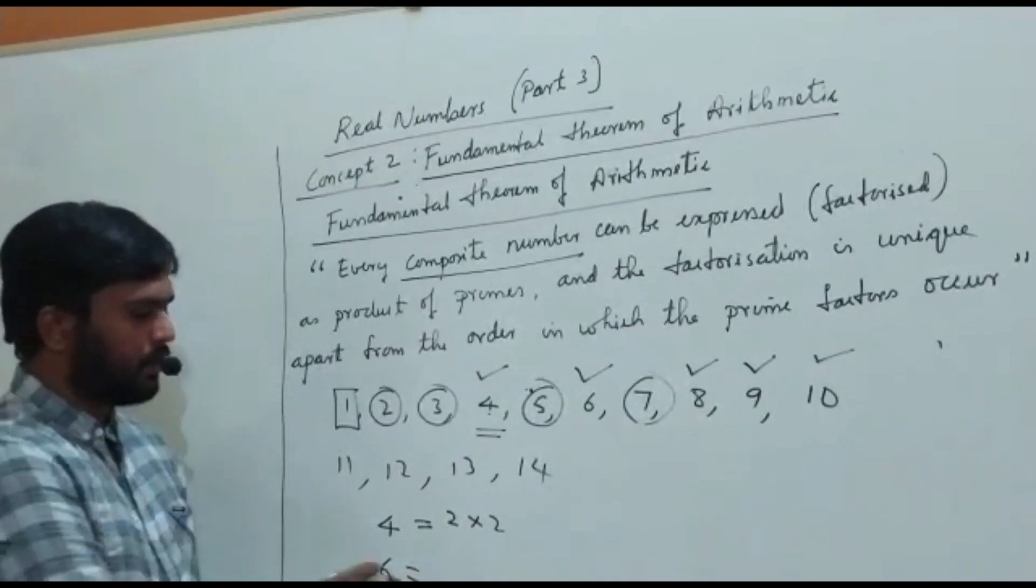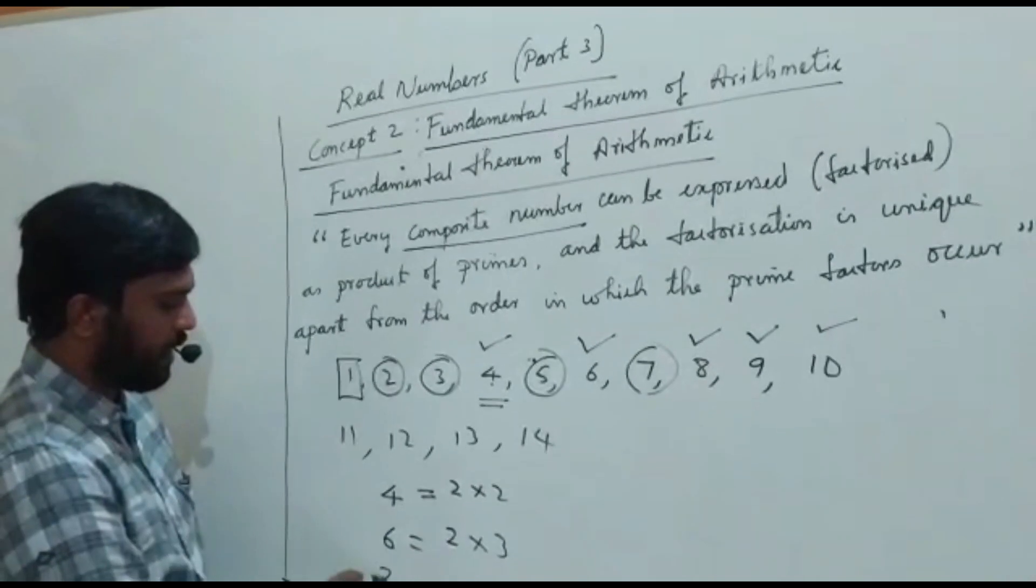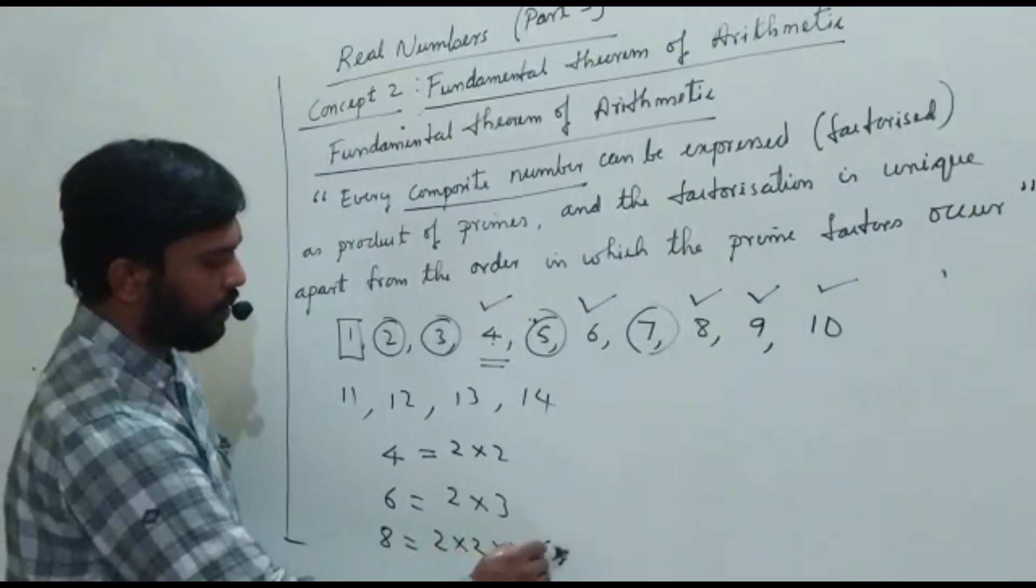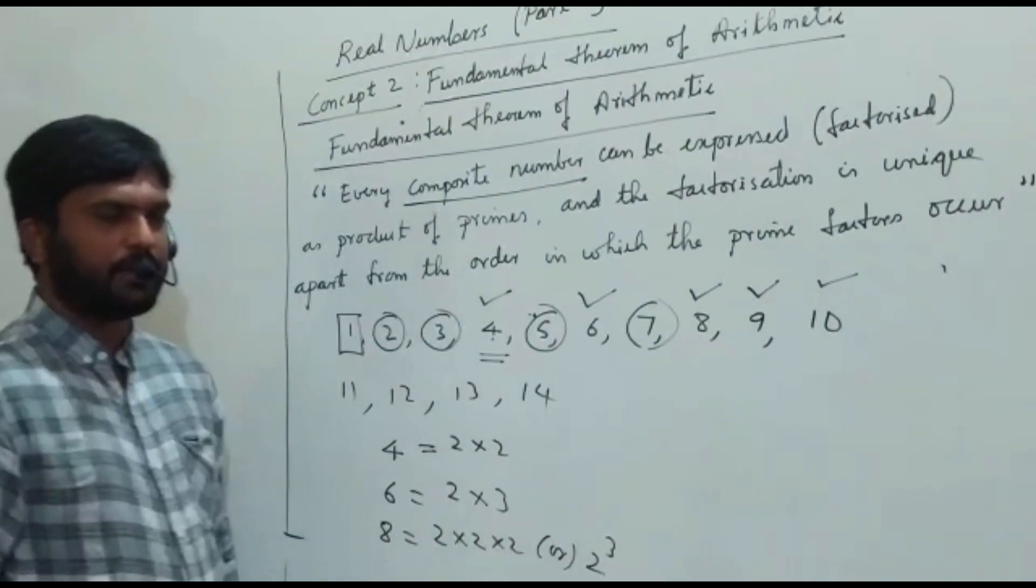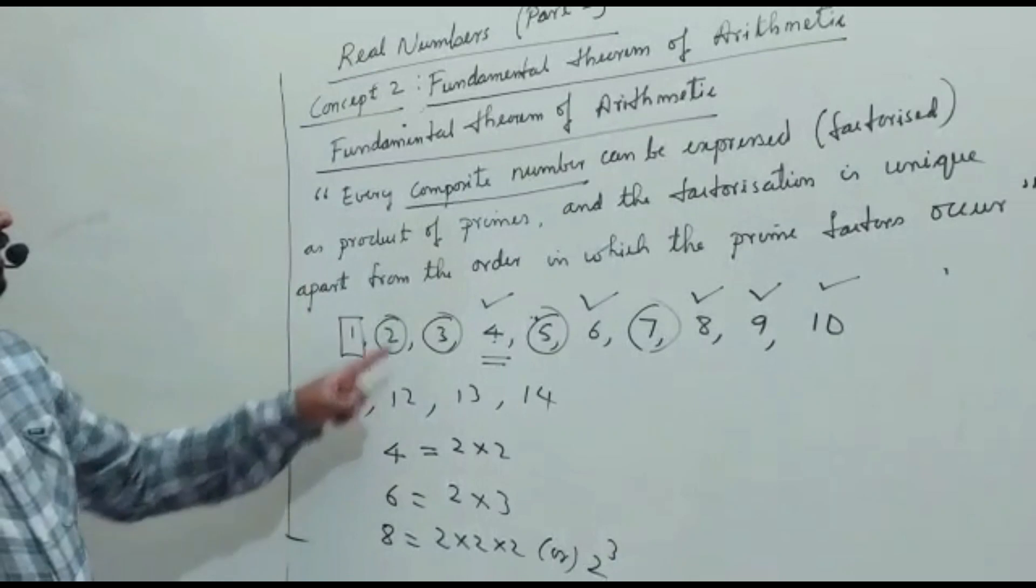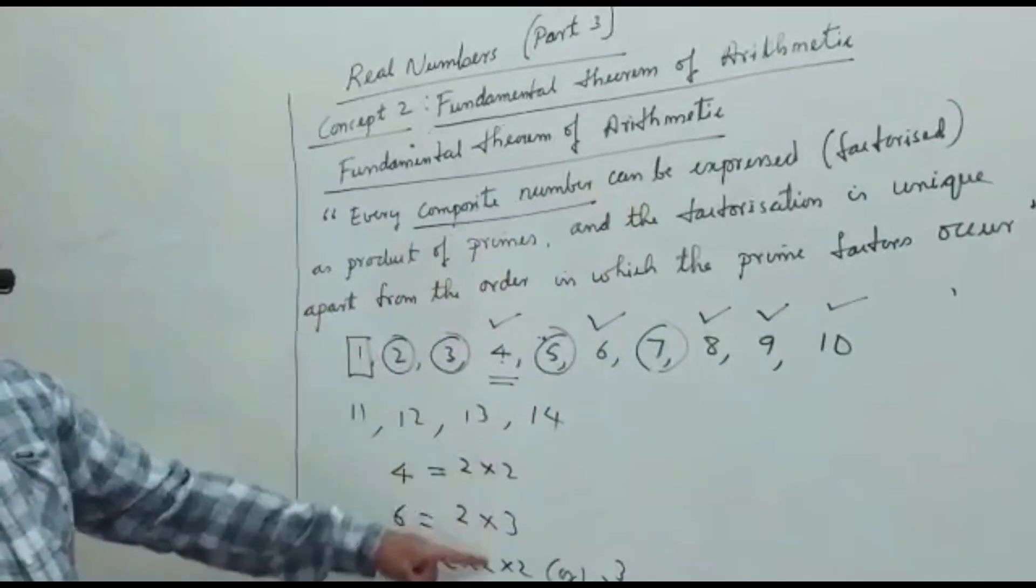You take 8, can be written as 2 into 2 into 2, or just we can write 2 to the power of 3. So every composite number can be expressed as product of primes. These are the product of prime factors.